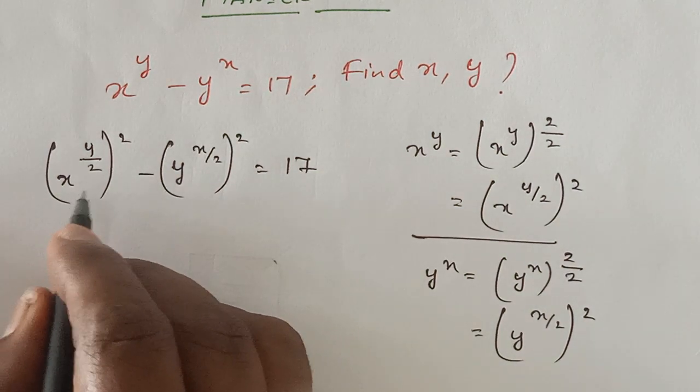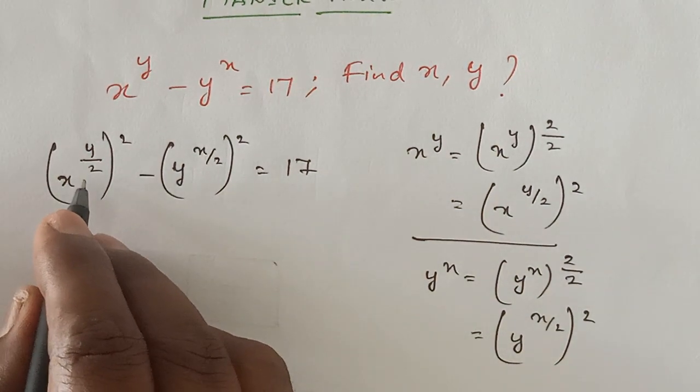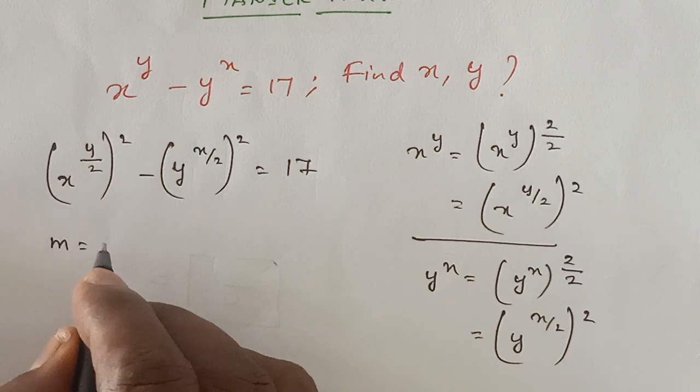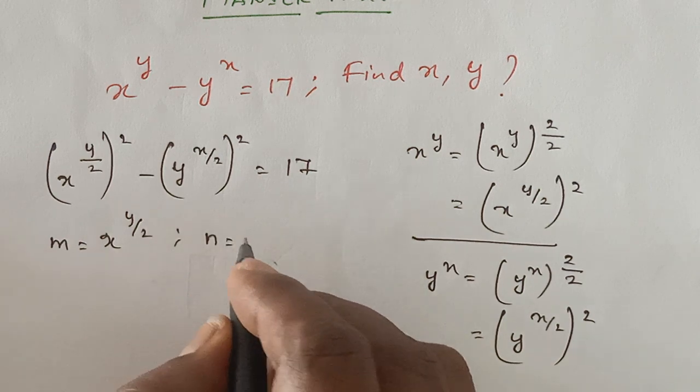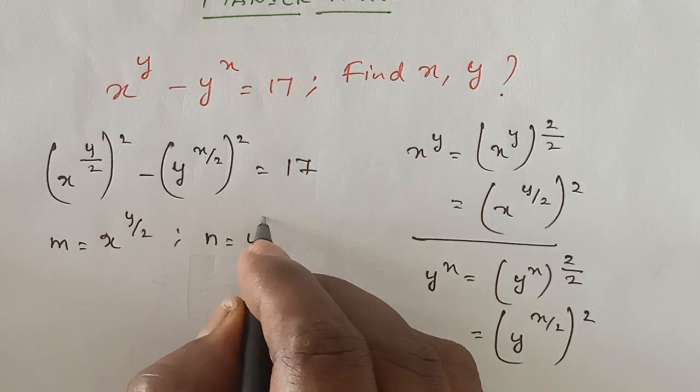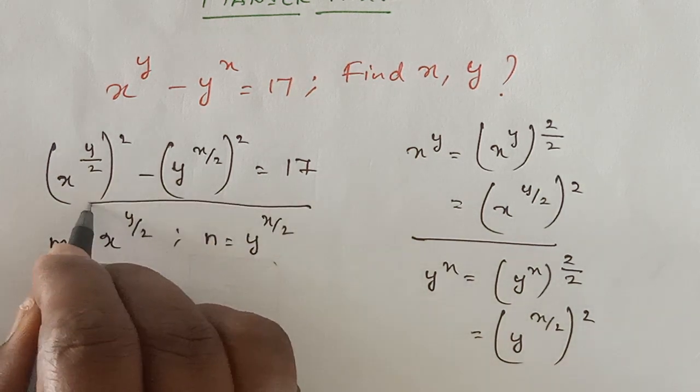Now this is of the form a^2 - b^2. So just I am assuming that m is equal to x^(y/2) and n is equal to y^(x/2). I am assuming this.